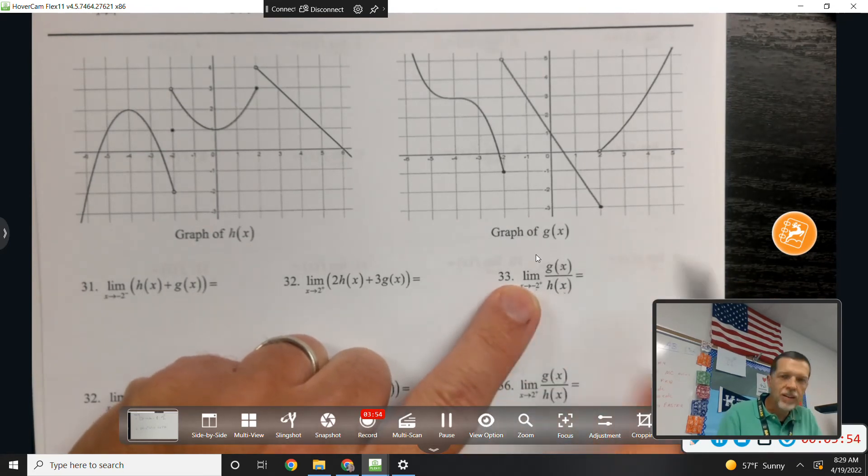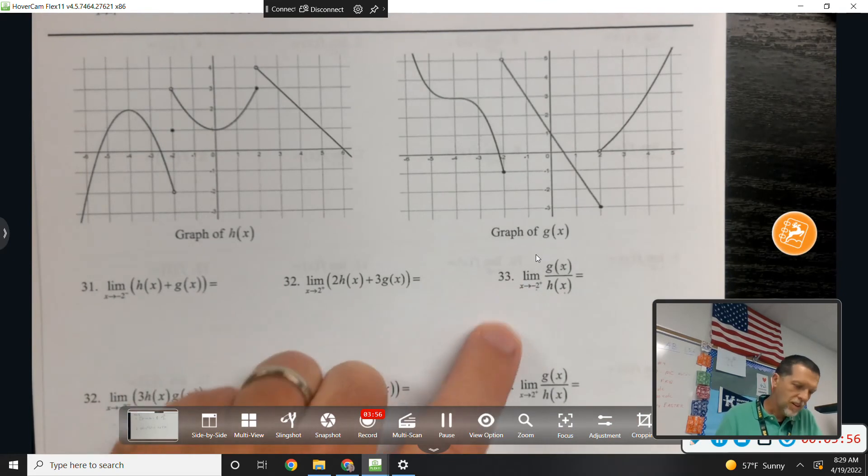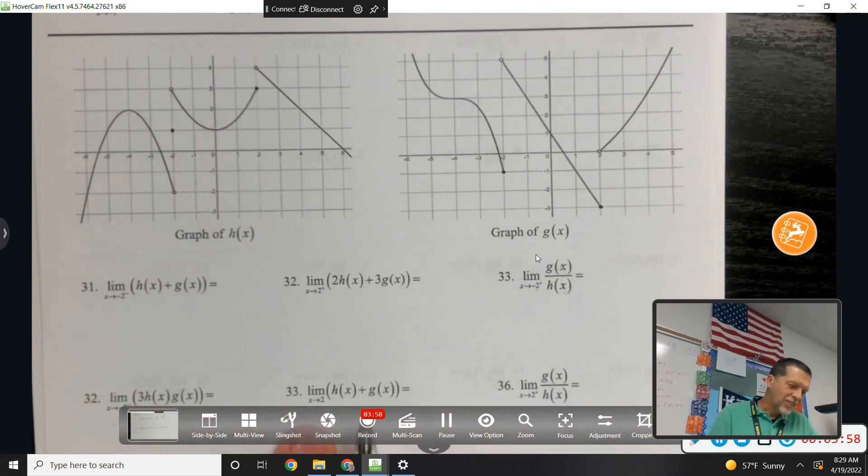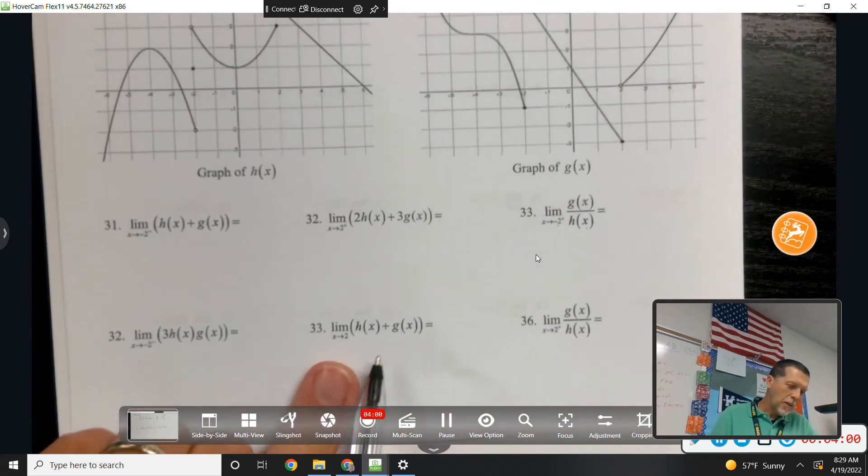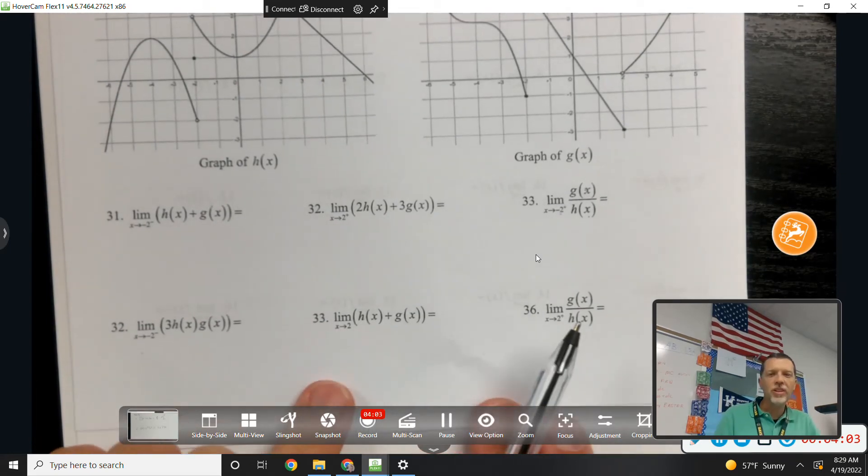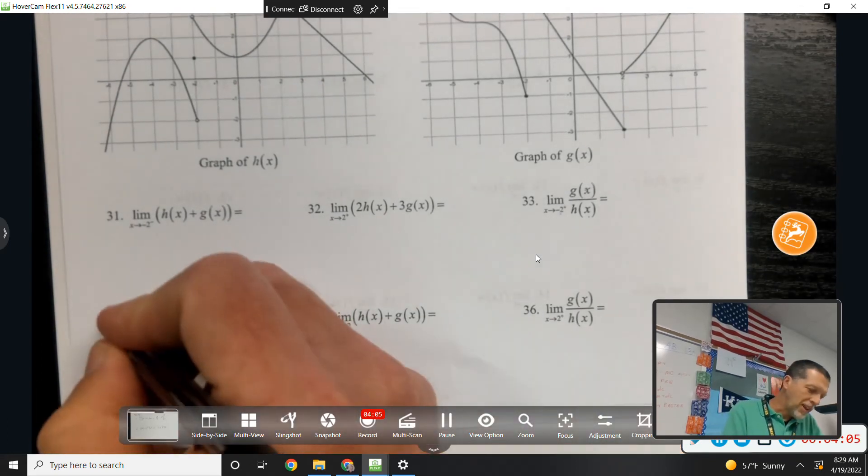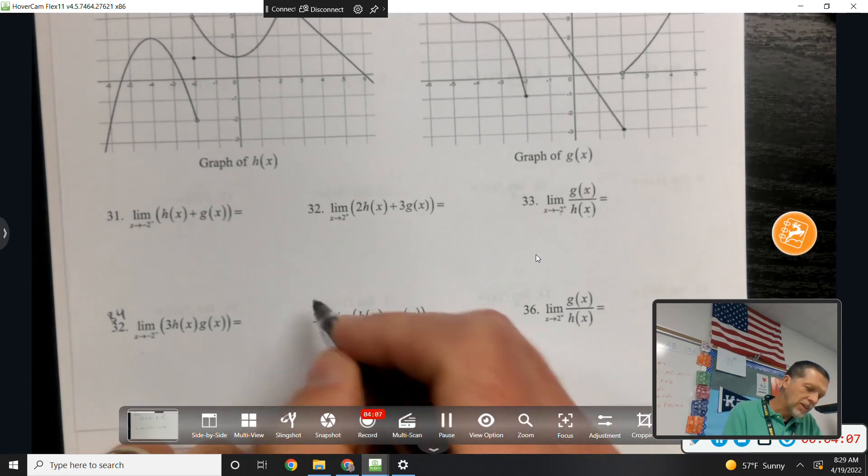33. Limit of g of x over h of x as x approaches negative 2 from the right. So, one thing at a time. And then the other 33. The other 33, because of course, there's two 33s, with a 32 in between the two 33s. So, you know, math teachers counting and whatnot.